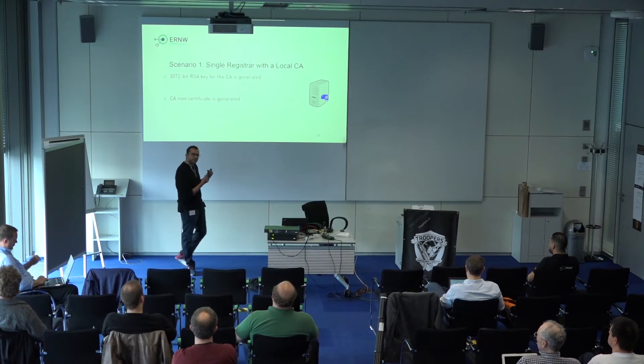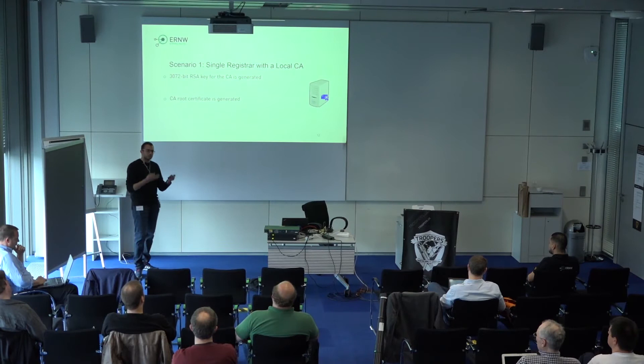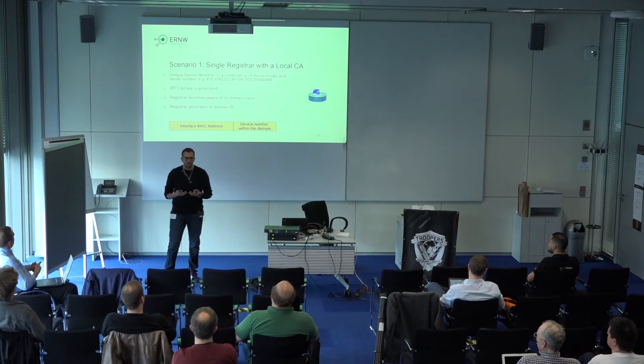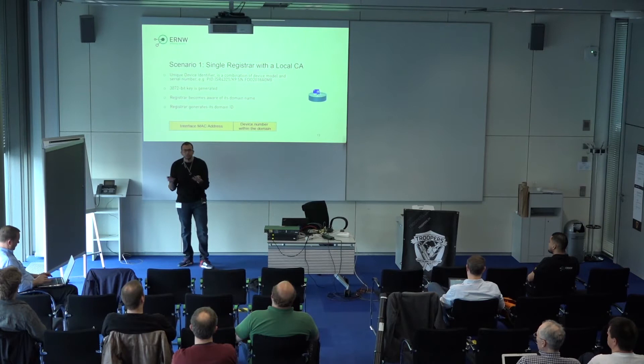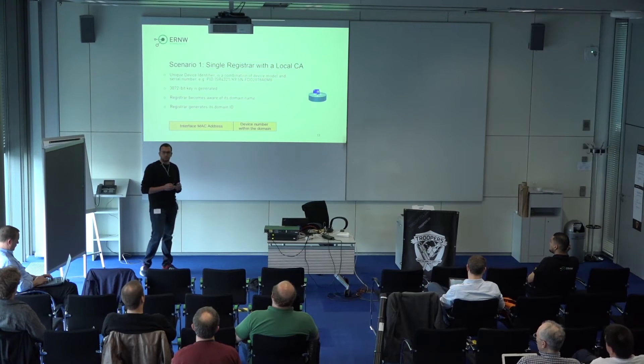What happens after those three or four commands? If we're speaking about a local CA, first the CA starts its functions. We generate a 3000-bit key. After that, the CA starts to generate its root certificate. Then the registrar becomes aware of its UDI — unique device identifier. Cisco thought that since we're speaking about new devices with no configuration, we need a specific identifier that's always unique. That identifier is just the serial number of the device — a combination of the device model and device serial number.